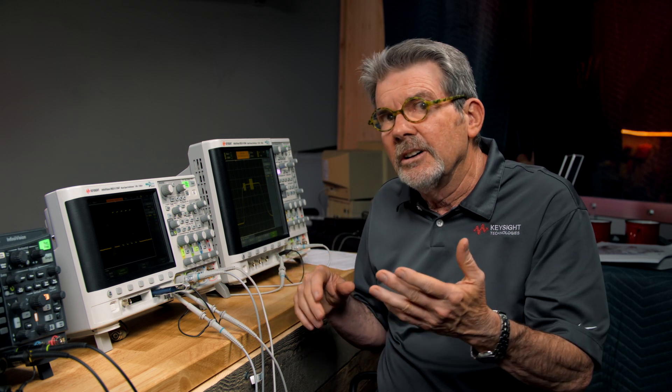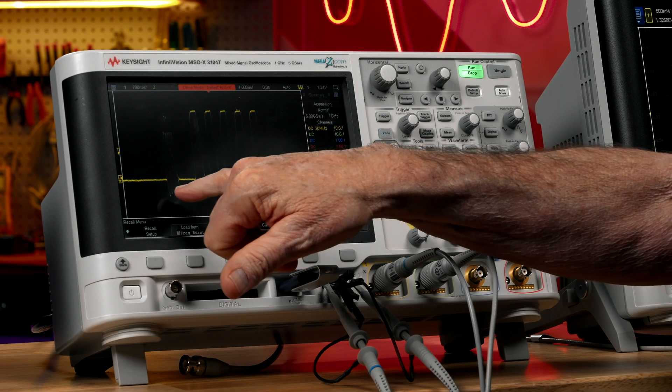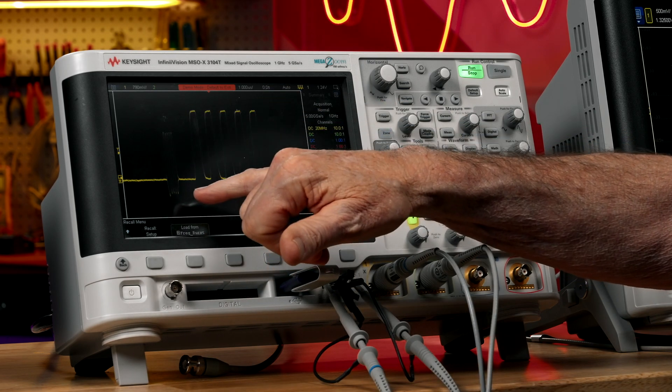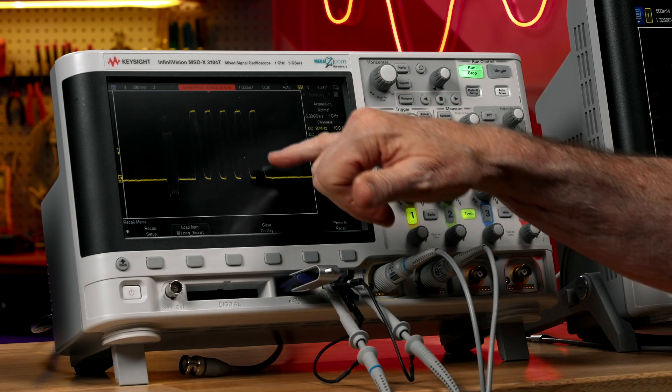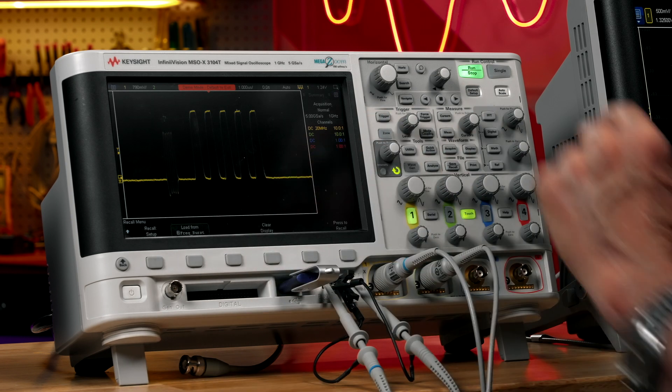So here's an example where the hardware counter is probably not going to work for us. We have two bursts of signals. There's an analog burst here, and then followed by a digital burst. And what if we want to know the frequency of each of those bursts?